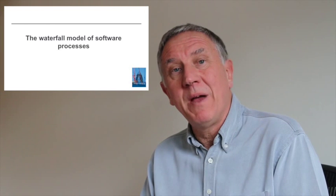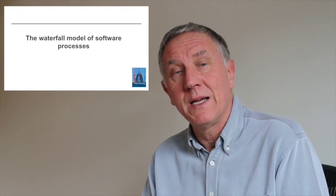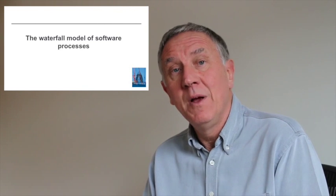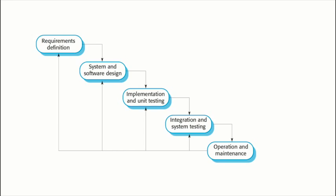The best known and still widely used plan-based process is called the waterfall process, which came from a standard engineering process used across the engineering industry for many years. It was introduced around 1970 and it breaks software development into a series of phases: requirements analysis and definition, system and software design, implementation and unit testing, system integration and overall system testing, and operation and maintenance.